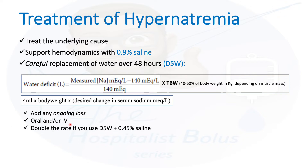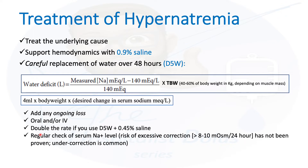If you're using anything apart from D5W — for example, D5W plus half normal saline, which is more concentrated — you might need to double the rate to correct the sodium within the same 48-hour window, since it's not as dilute as D5W alone.